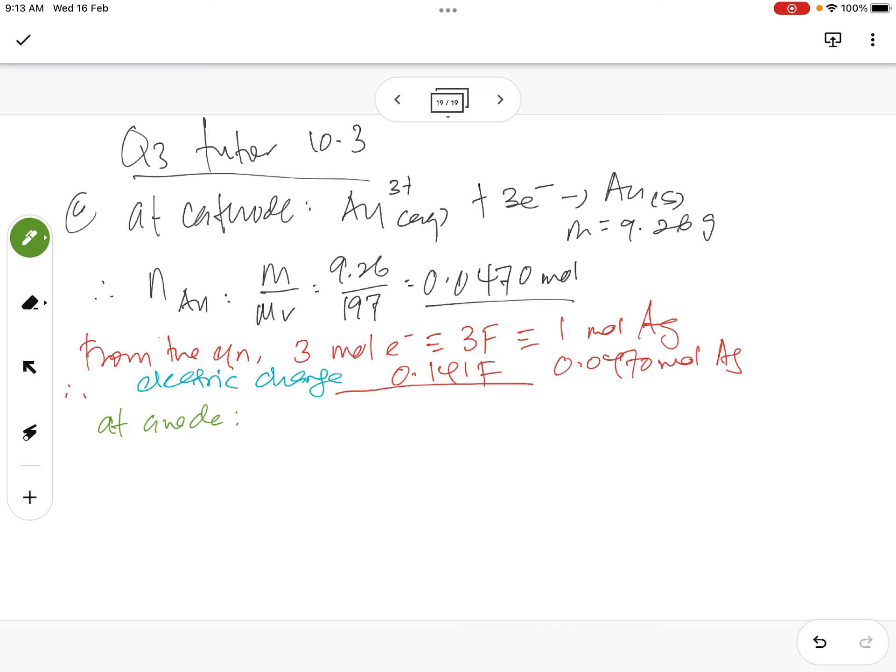So if we go to anode - at anode, what happens is they say calculate the volume in liters of oxygen gas generated. Okay, normally oxygen gas, you remember, we generate at anode. So it's 2H2O goes to O2 plus 4H+ plus 4 electrons. Sorry. This is the gas equation that shows the oxygen gas is generated at anode. Can you follow so far? Look again, if you don't understand you can ask.